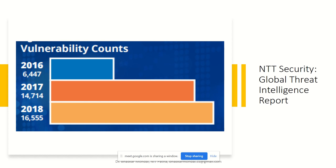According to a Global Threat Intelligence Report, the number of vulnerabilities is increasing every year. In 2016 it was around 6,500; by 2018 it became around 16,500. The number of vulnerabilities is increasing every day because the number of users on the internet is also increasing — more users means more chaos and it becomes harder to control.